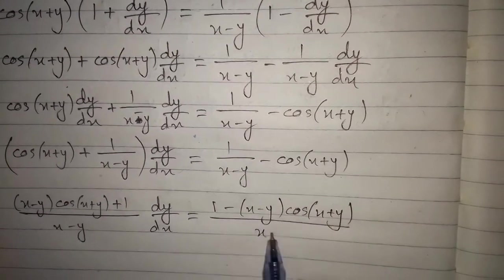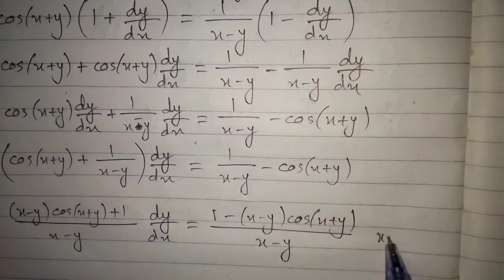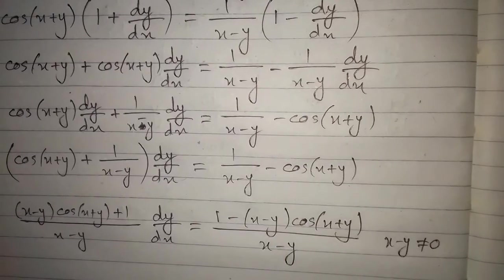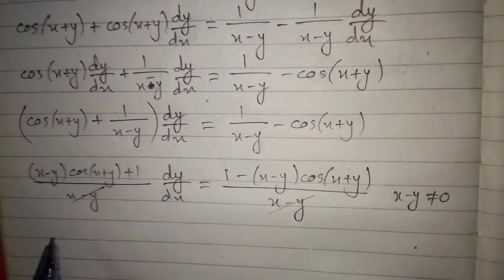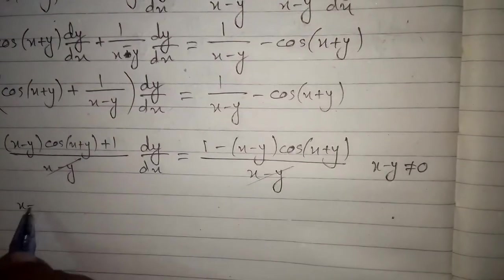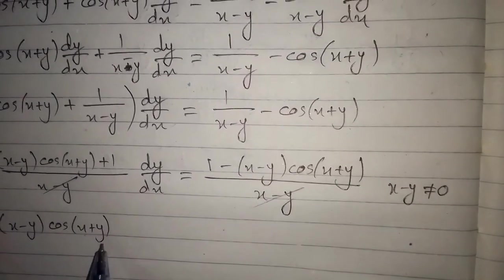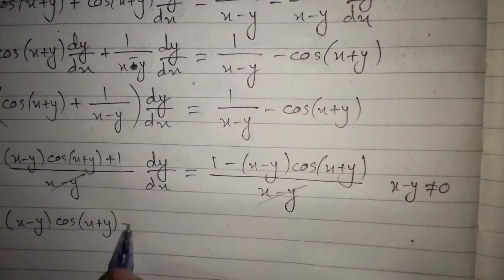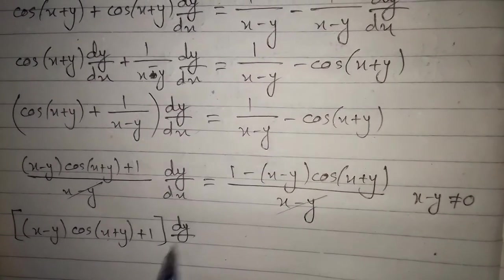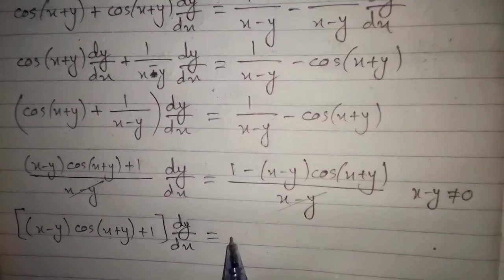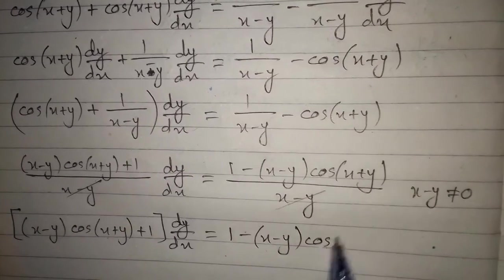Since x minus y is not equal to zero, we can cancel these common factors. This gives us: x minus y times cos of x plus y, plus 1, times dy/dx equals 1 minus x minus y times cos of x plus y.